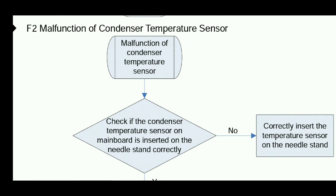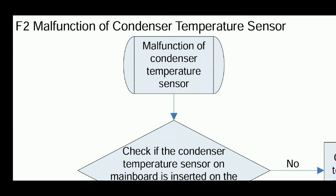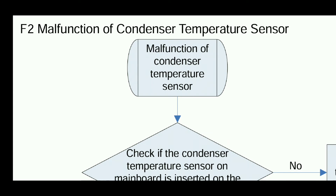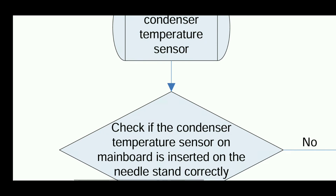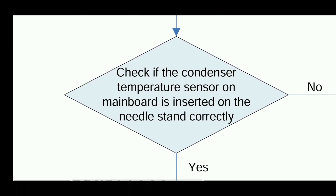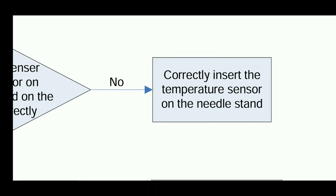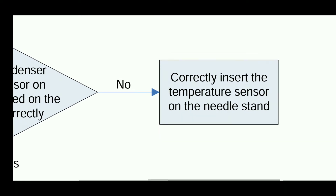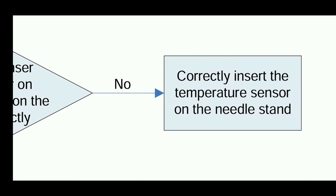This is the flowchart of the F2 error in Gree inverter air conditioner — malfunction of condenser temperature sensor. First, check whether the condenser temperature sensor on the main body is inserted on the needle stand correctly. You can check if the condenser sensor is correctly inserted or not.